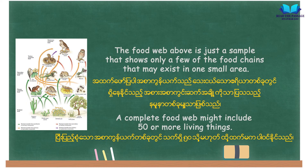The food web shown is just a sample that shows only a few of the food chains that may exist in one small area. A complete food web might include 50 or more living things.